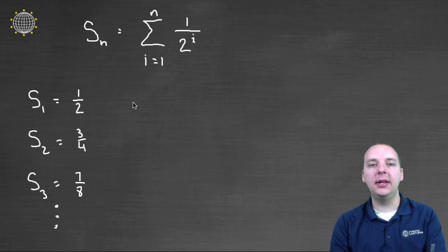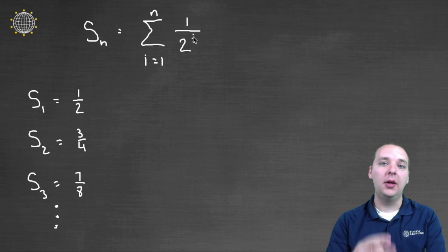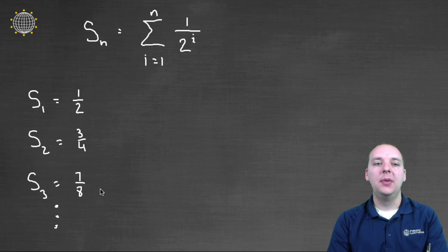S sub 3, then that's the sum of the first three terms. A half plus a fourth plus an eighth. You do all that algebra, you get seven eighths. But beyond that, it starts getting kind of hairy.